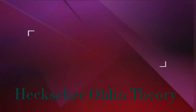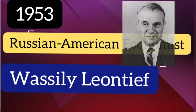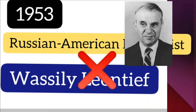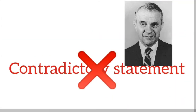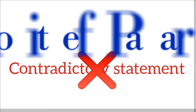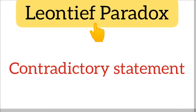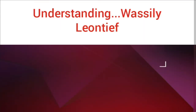But in 1953, a Russian-American economist named Wassily Leontief opposed the concept of Heckscher-Ohlin theory with a contradictory statement. This contradiction is known as Leontief Paradox. So first we have to understand some information about economist Wassily Leontief.